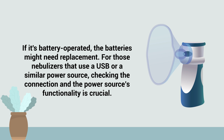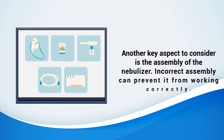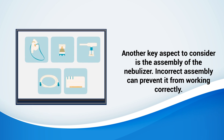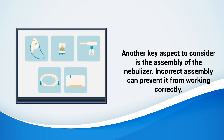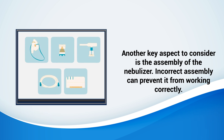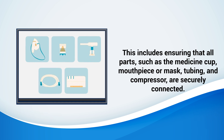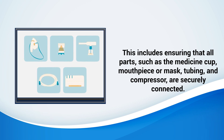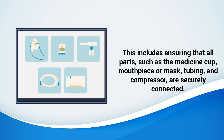For nebulizers that use a USB or similar power source, checking the connection and the power source's functionality is crucial. Another key aspect to consider is the assembly of the nebulizer. Incorrect assembly can prevent it from working correctly. This includes ensuring that all parts — such as the medicine cup, mouthpiece or mask, tubing, and compressor — are securely connected.